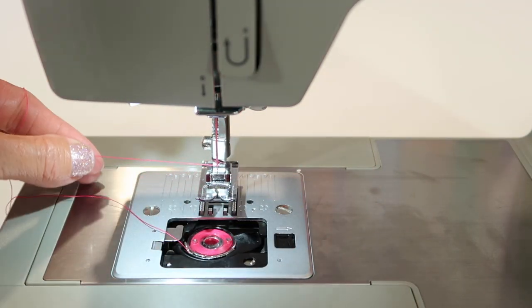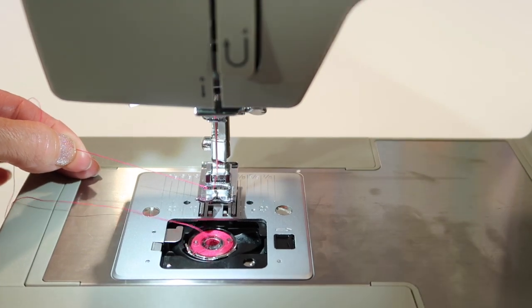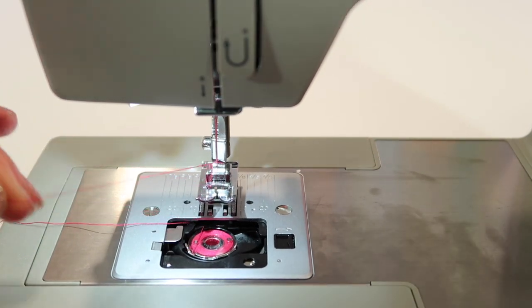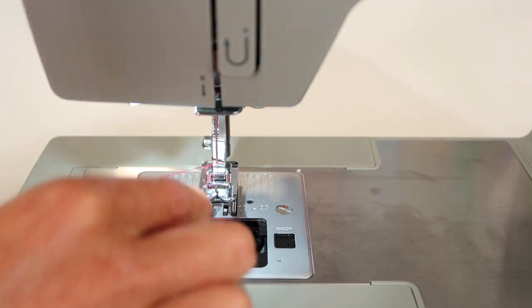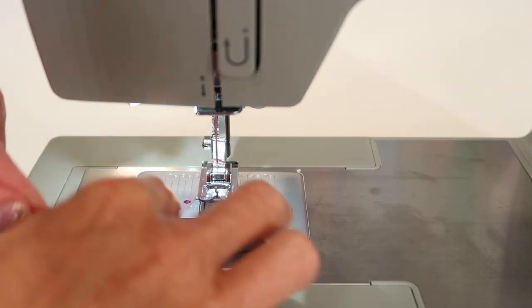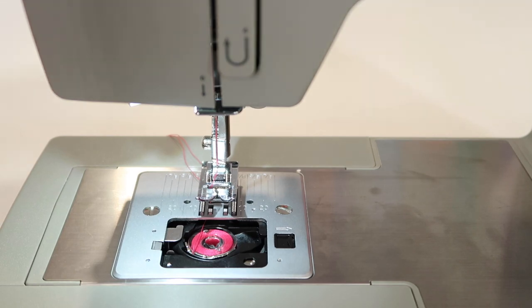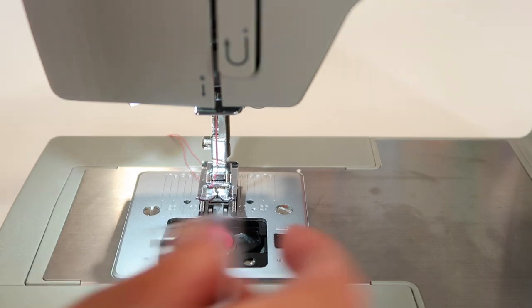Let's hold onto the thread and then take one full stitch. This will also confirm that I put everything back together correctly. Bring up that bobbin thread. Of course, a little test sewing is going to make all the difference.